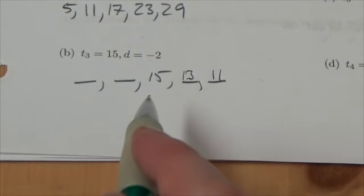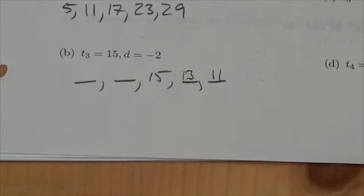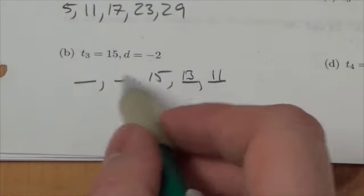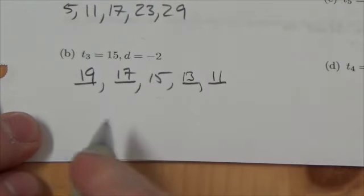Now if I'm going backwards though, then I got to do this backwards. So instead of subtracting two, if I'm going to go in the other direction, I'm really going to add two to this. So this will be 17 and if I add two again, I go up to 19.